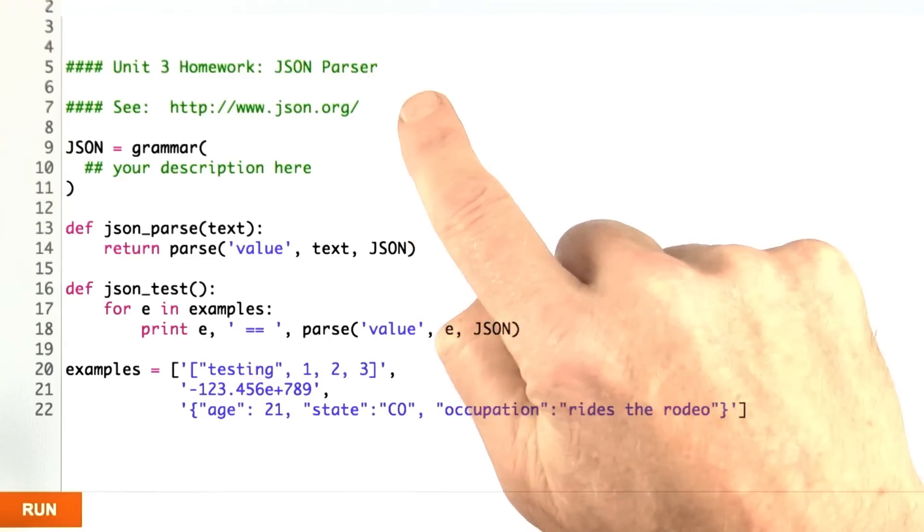JSON is a data interchange language for JavaScript that allows JavaScript programs to pass values back and forth and pass them on to other programs.